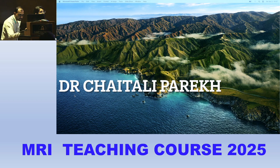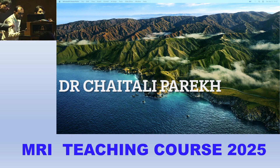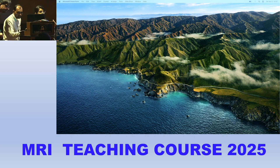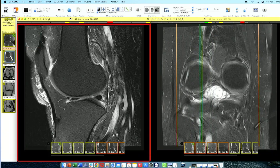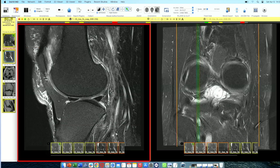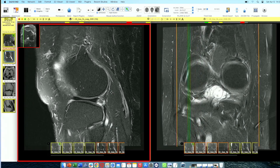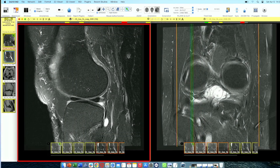I'm going to show you four cases — some are basic tests and some are complicated. We'll have a short discussion of each. I'll be scrolling and will put an arrow wherever I find the pathology for you to understand better. This is a sagittal T2 fat-saturated image, and this is the lateral meniscus because this is the lateral compartment.